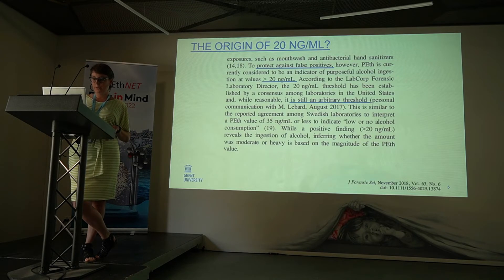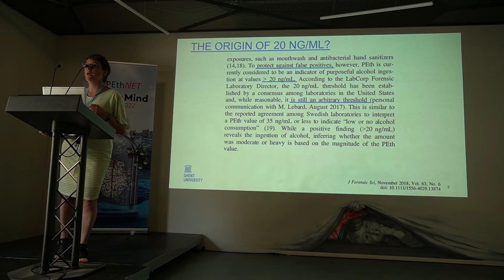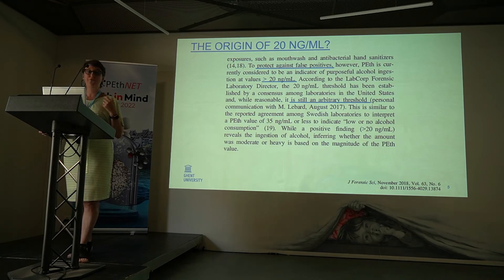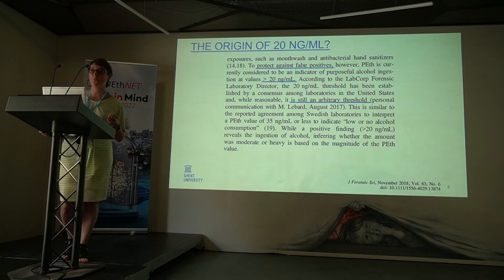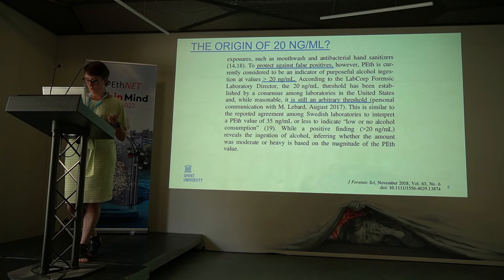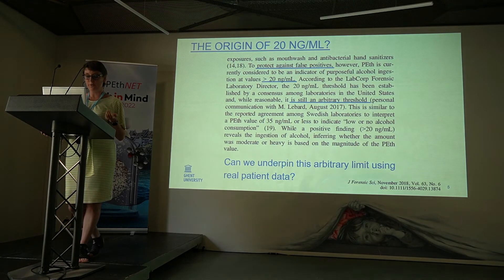If you read this publication from 2018, we use a number which will allow us not to falsely accuse someone of having been drinking. And so the 29 nanogram per milliliter is high enough, but still it's an arbitrary threshold. So we thought, is there a way to underpin this arbitrary limit with real patient data?